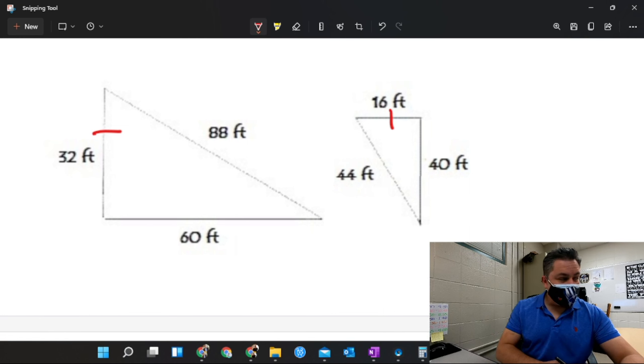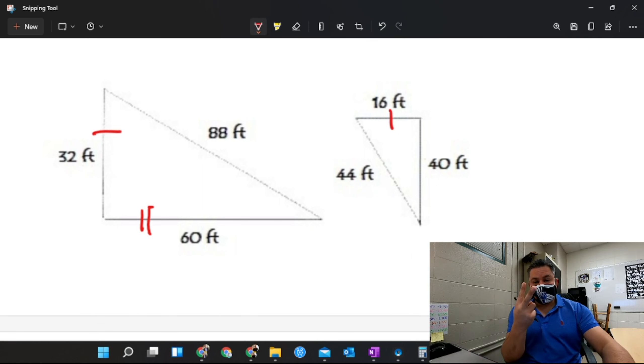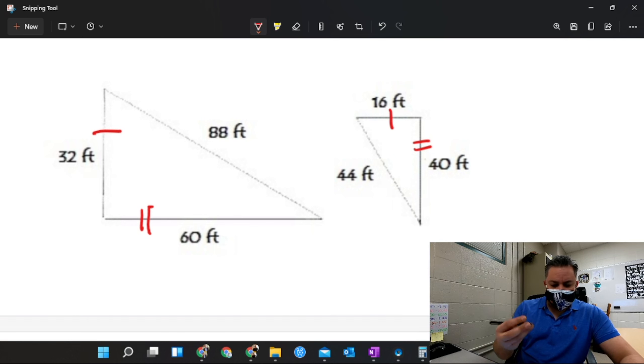And then I'm gonna get the middle length in the big one, which is right here, and I'm gonna put in two tick marks to differentiate. If you have different colors, you can do different colors as well. And lastly, we have three tick marks with the longest side.